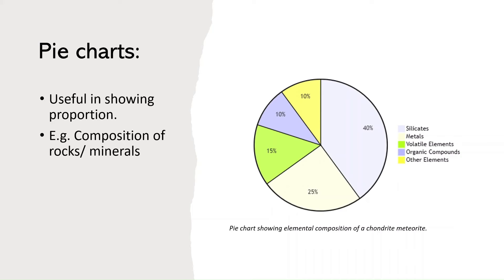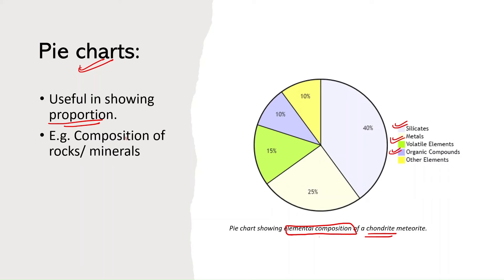Pie charts are one of the most underused diagrams in geology answers. You can use them to show various proportions of minerals or rocks — for example, geochemical compositions of igneous or metamorphic rocks. As shown here, I have represented the elemental composition of a chondrite meteorite in a pie chart. Always mention what each quadrant represents within the pie chart itself. It is a very effective way to represent different proportions of a particular mineral or rock.